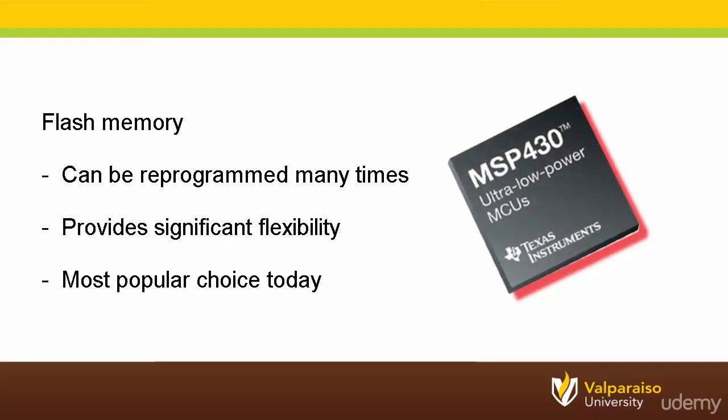The next big breakthrough in non-volatile program memories was flash memory, or simply flash. Flash memory allows its entire contents or selected sections to be electrically erased and reprogrammed hundreds or thousands of times. Since the 1990s, microcontrollers with flash program memory have become the preferred option for most embedded system manufacturers. Masked ROM parts were the most popular option for so long that ROM has become slang for all other types of program memories. It is quite common to hear two engineers talking about microcontrollers and ROM memory when they are actually referring to microcontrollers and flash memory.